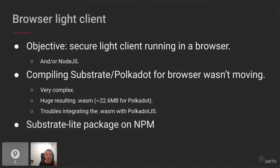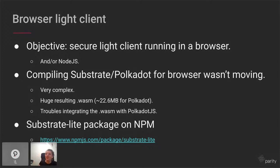Substrate Light, however, was designed with that browser use case in mind. As proof, we already have a Substrate Light package on NPM. You can search substrate-lite on npmjs.com. It's a regular JavaScript package — you don't have to do anything special to use it. It has a user-friendly API. The point is anyone who writes JavaScript should be able to connect directly to the chain using this package.